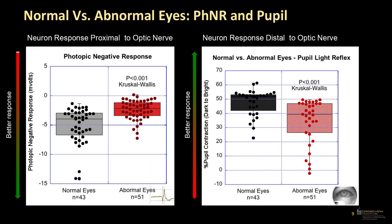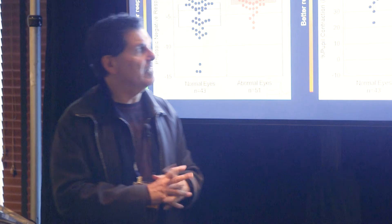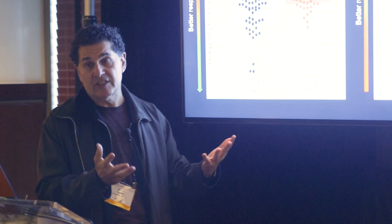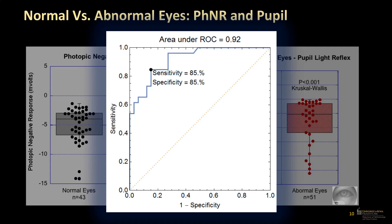This shows the patients we tested — a variety of optic neuropathies, about 51 eyes compared to 43 normal eyes. Looking at them as a group, there was a highly statistically significant lower photopic negative response in the optic neuropathy group, with some overlap. There were also significant deficits in the pupil response, as you'd expect. When we combined those two measures and looked at the receiver operating characteristic curve, the area under the curve was 0.92 — not too bad for a first pass. I think we may be able to improve upon this as we get better at recording.